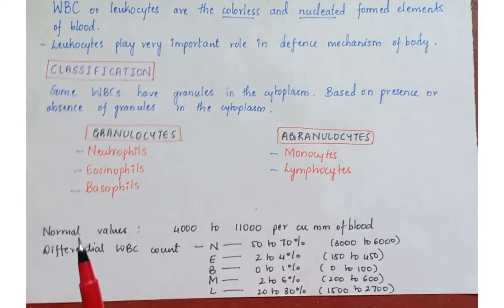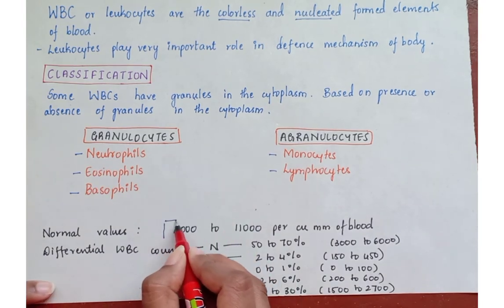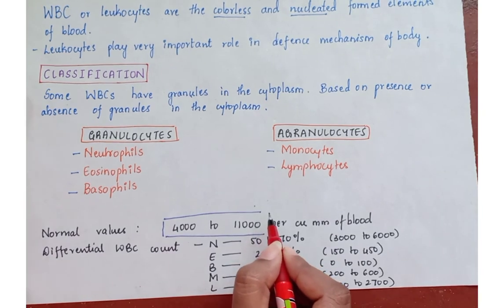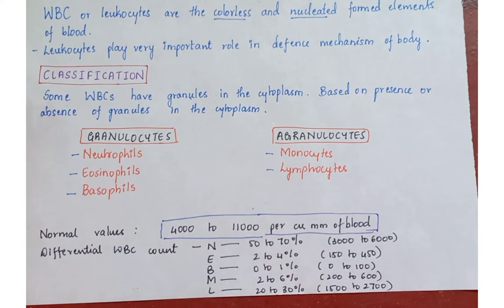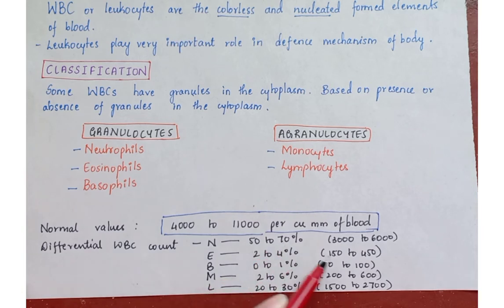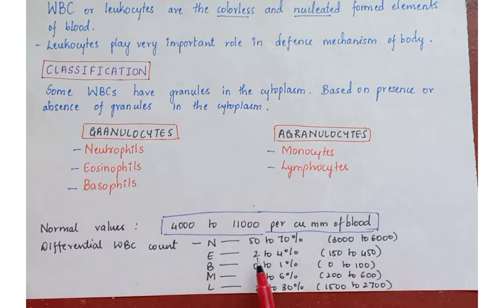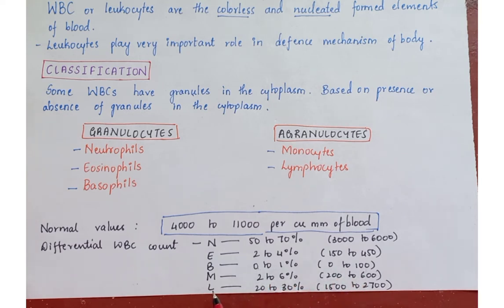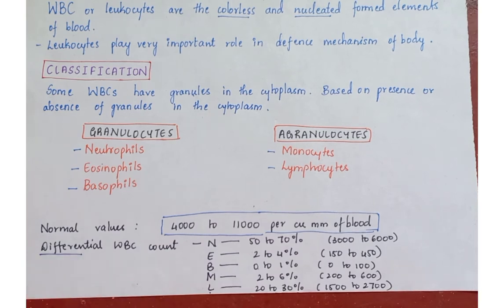Basically they are granulocytes and agranulocytes. Normal values: Total WBC count is 4,000 to 11,000 per cubic millimeter of blood. Differential WBC count — neutrophils are 50 to 70%, which is 3,000 to 6,000 per cubic mm. Eosinophils are 2 to 4%, which is 150 to 450 per cubic mm. Basophils are 0 to 1%, which is 0 to 100 per cubic mm. Monocytes are 2 to 6%, which is 200 to 600 per cubic mm. Lymphocytes are 20 to 30%, which is 1,500 to 2,700 per cubic mm.